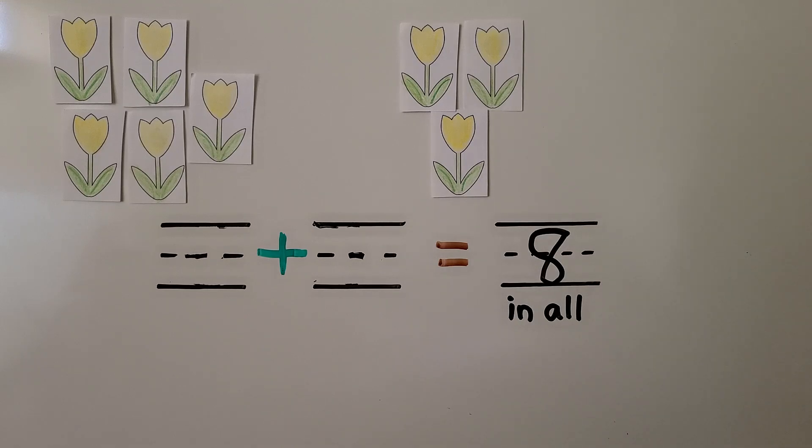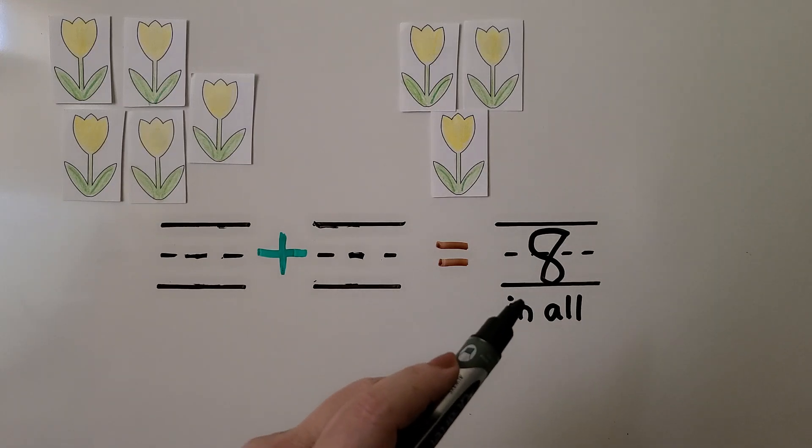Bob has five flowers in his garden. He planted more flowers. Now he has eight. How many more flowers are added?